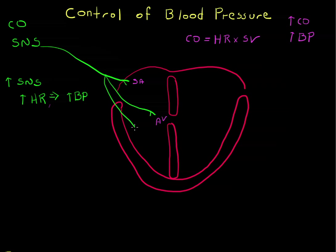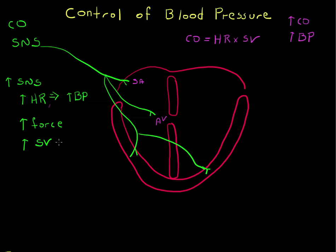The sympathetic nervous system also sends signals to the heart muscle. An increase in the sympathetic nervous system signal to the heart muscle increases the force of contraction, which pushes more blood out with every contraction, increasing the stroke volume. Increasing the stroke volume also increases the blood pressure.